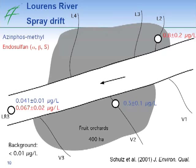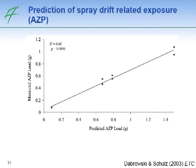During this pesticide entry, certain concentrations — lower ones due to dilution — were found in the Lawrence River itself at site LR3, higher than the background level of 0.01 microgram per liter usually found there. We then compared the spray drift measurement data with modeled spray drift data. On the y-axis you can see the measured azinphosmethyl load from our field sampling, and on the x-axis the predicted load. There is a pretty good relationship between the two, meaning we can use this spray drift model — regularly used for risk assessment in Germany — also to predict spray drift in this South African catchment.